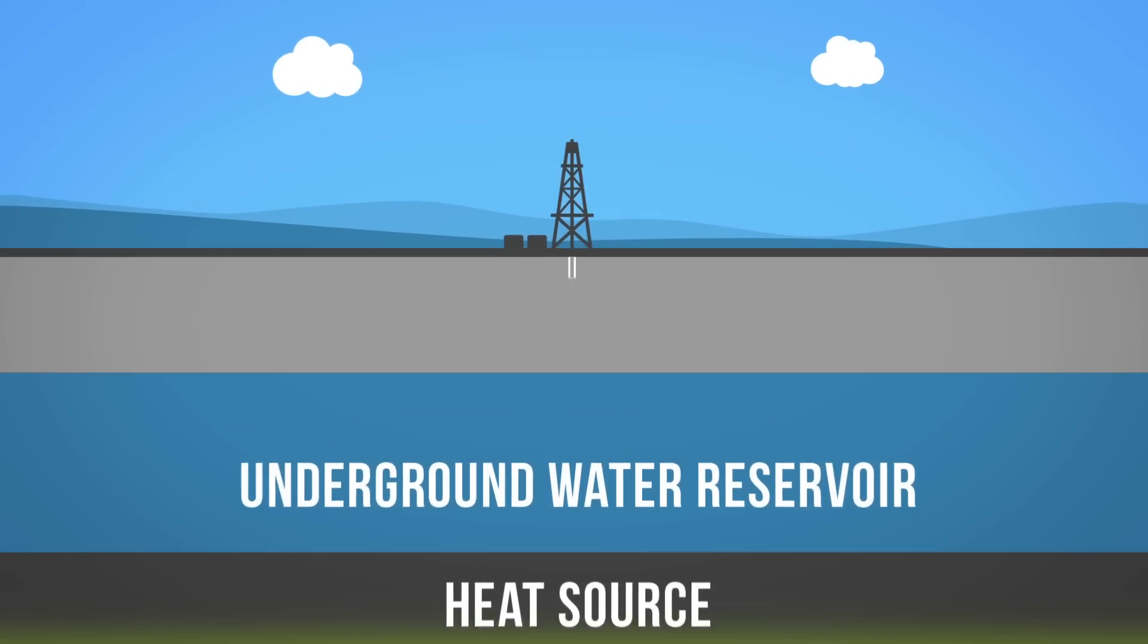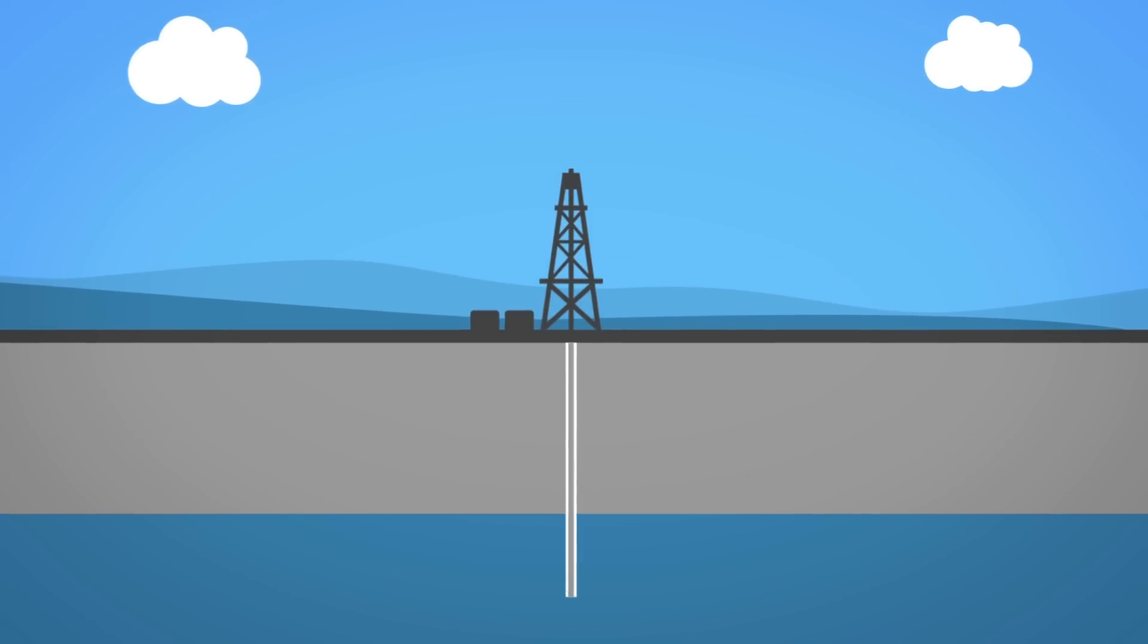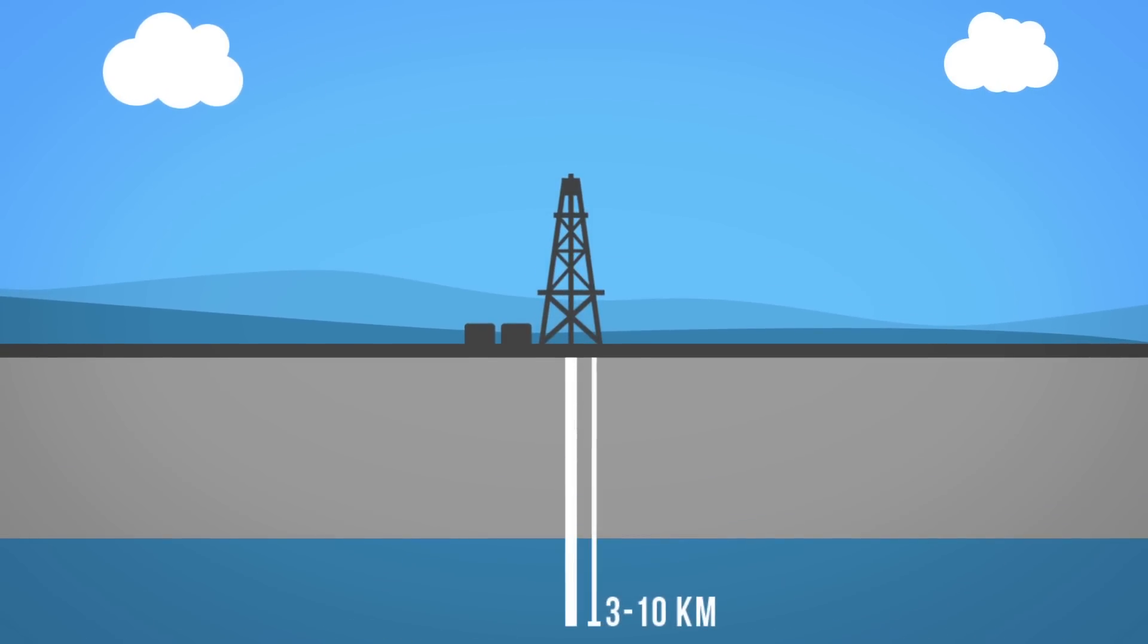Geothermal wells are drilled into the Earth's crust at approximately a depth of 3 to 10 km. The heat is extracted with a variety of methods, but in most cases is drawn from the Earth using water and steam.